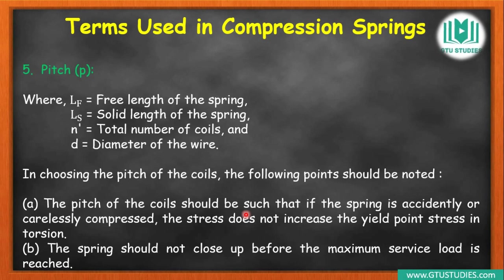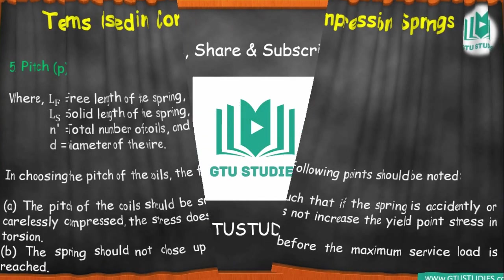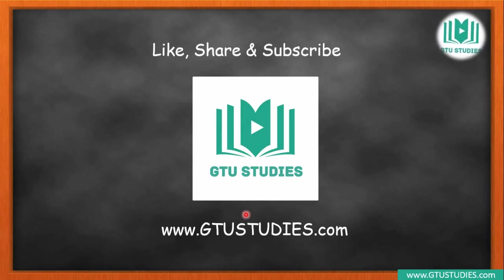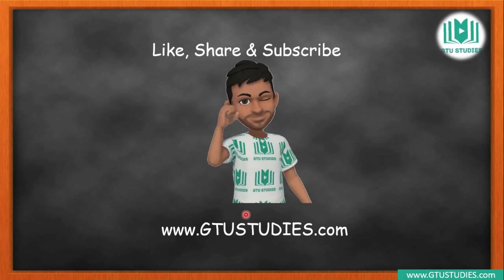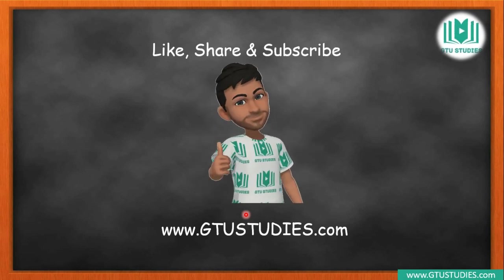So, the terms we covered today are: first — solid length, second — free length, third — spring index, fourth — stiffness or spring rate, and fifth — pitch. These terms will be used in the upcoming spring design topics and numerical problems. I hope you understood today's video on these terms. Please like, share, and subscribe to the GTU Studies channel. Thank you.